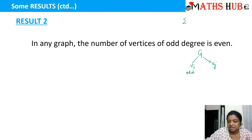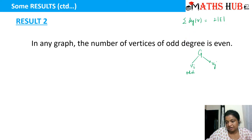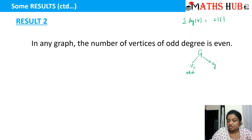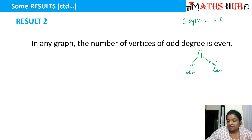Why is this so? From the handshaking lemma, the summation of degrees of all vertices equals two times the number of edges. Whatever the edge count is — whether even or odd — when multiplied by two, you always get an even number. That means the total degree sum is even. If we divide vertices into odd-degree and even-degree groups, the sum of even-degree vertices will itself be even.